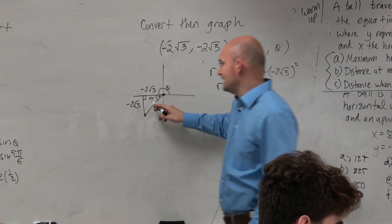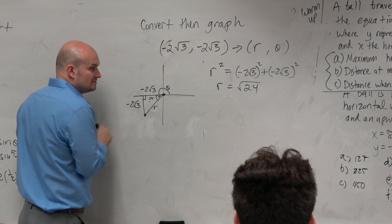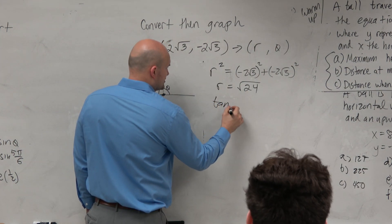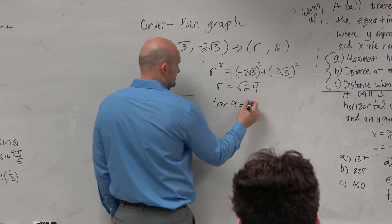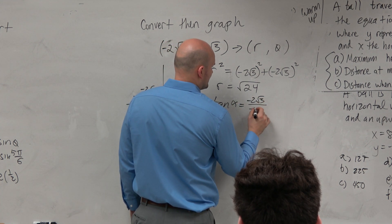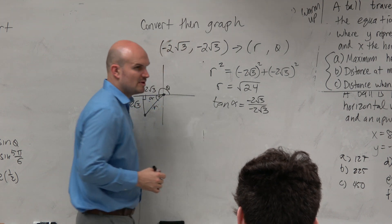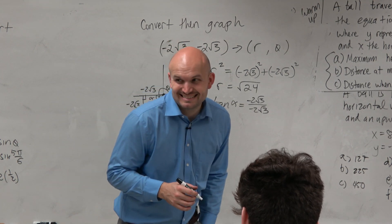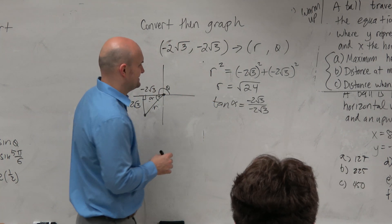Now can we figure out what theta is or this alpha? Sure. Why don't we say tangent of alpha is equal to negative 2 square root of 3 over negative 2 square root of 3. Does anybody recognize what alpha would be? One.